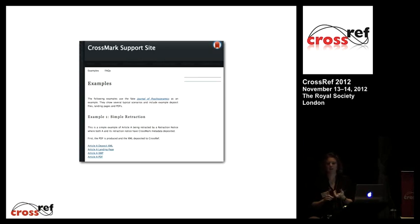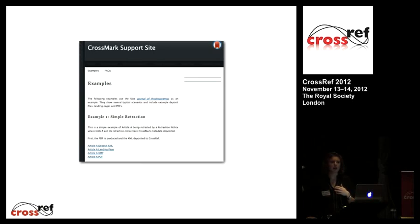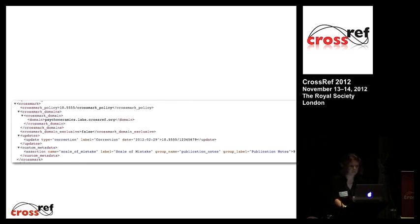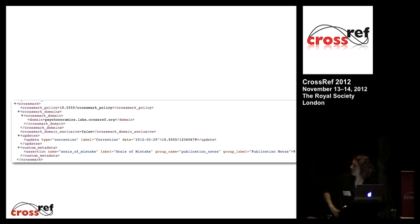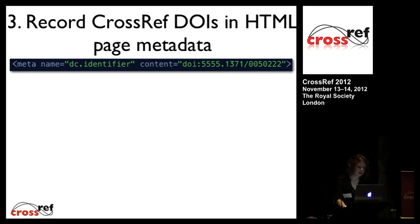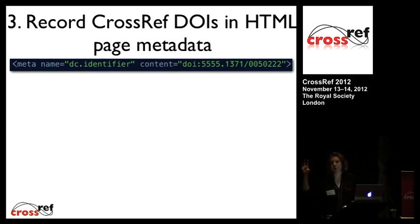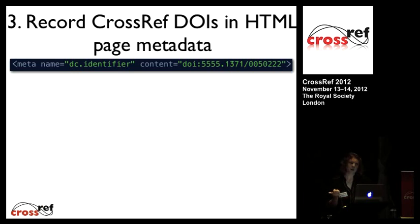The annotated sample site shows how to do corrections, retractions, and more complicated things like multiple documents being updated by a single retraction. There's a snippet of metadata showing correction detail information and the DOI of the policy page. You need to record the Crossref DOIs in the HTML page metadata, because that's what the Crossmark widget looks at to retrieve the correct metadata for that article — so if there's a correction or update, it reflects that.